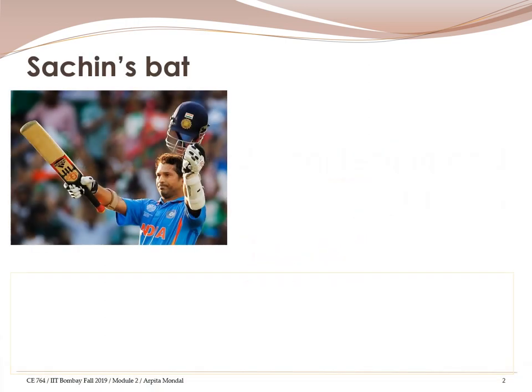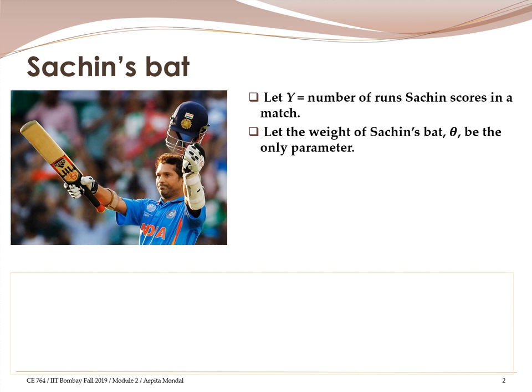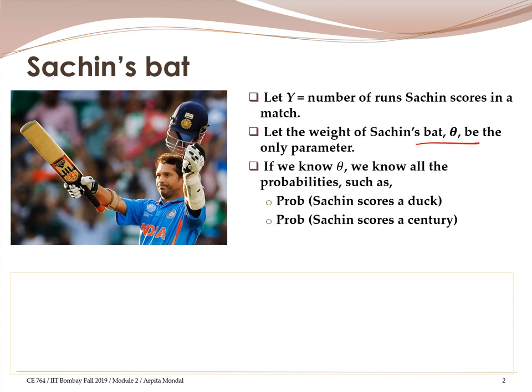Let's take a very simple example. We are all fans of cricket, and let us say Sachin uses a single bat in all his matches, and the only deciding factor in determining how well he is going to score in a match is the weight of his bat. Let y be a random variable which denotes the number of runs Sachin scores in a match, and the weight of his bat, theta, is the only parameter. By definition, if we know theta, we know everything about how well Sachin is going to perform in a given match.